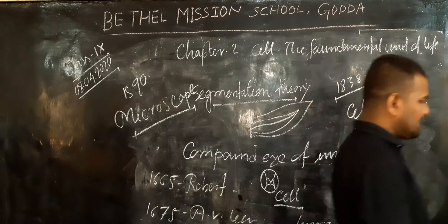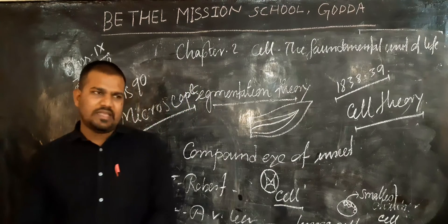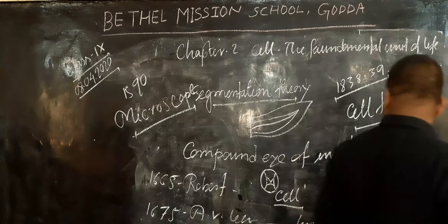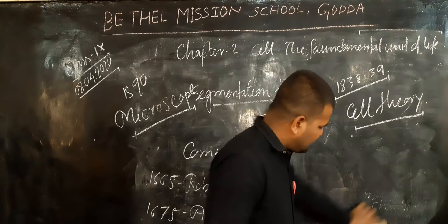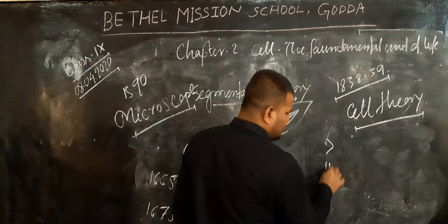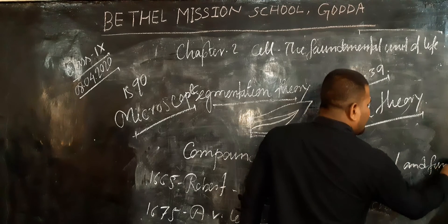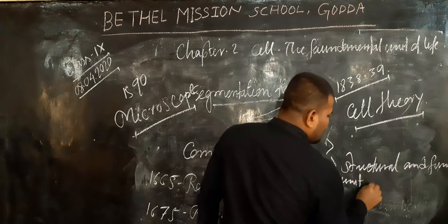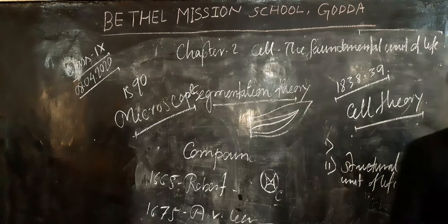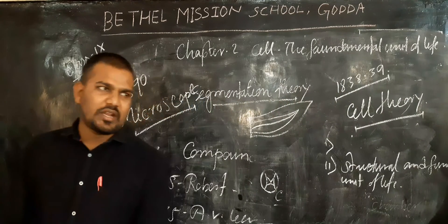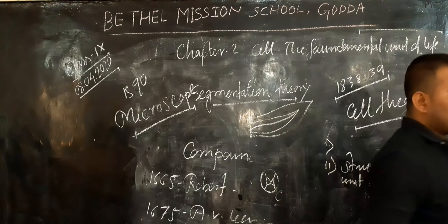Now we are going to explain the cell theory. The first point within the cell theory: the cell is the basic unit of life. Why? Because every living organism is formed by the cell. The second point: the cell is the structural and functional unit of life. Organisms that contain a single cell are termed as unicellular organisms.